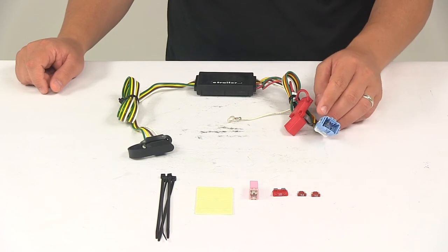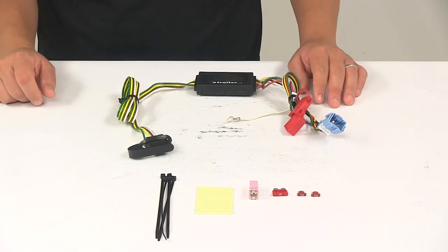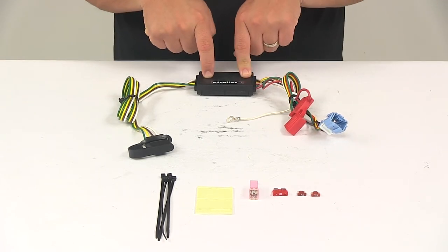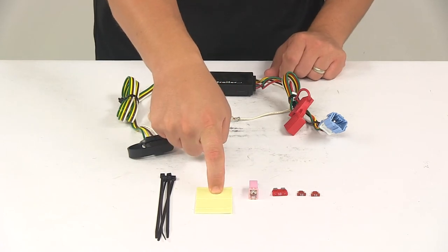Once you have that plugged in, you will need to mount the converter box to a safe, out-of-the-way location with the included double-sided adhesive foam tape.